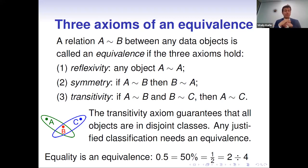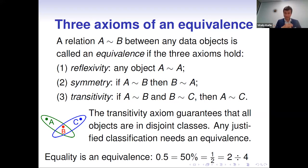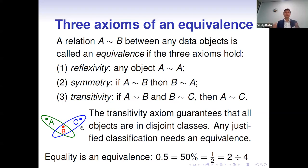Equivalence is a very general concept in mathematics. An equivalence relation is a binary relation between objects satisfying three axioms. Reflexivity means any object is always equivalent to itself. Symmetry means if A is equivalent to B, then B is equivalent to A. Transitivity — the most non-trivial axiom — means if A is equivalent to B and B is equivalent to C, then A is equivalent to C.